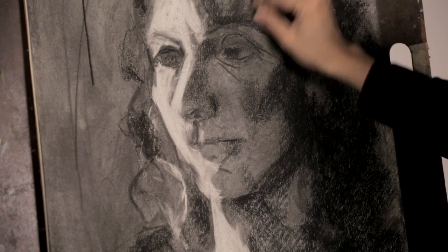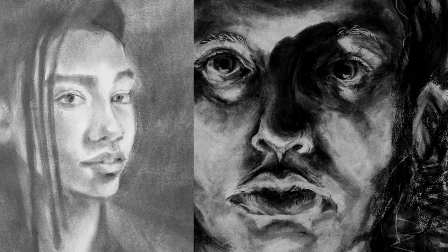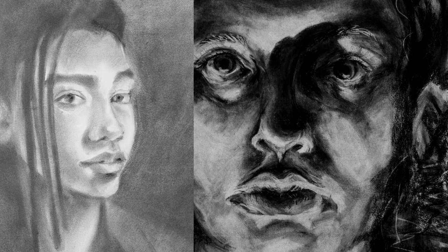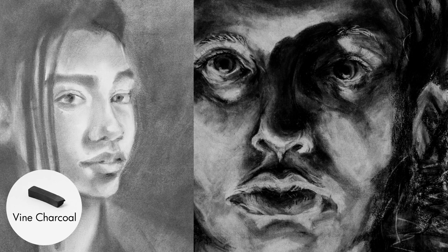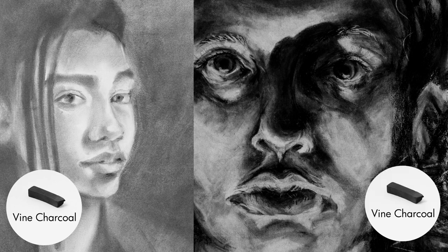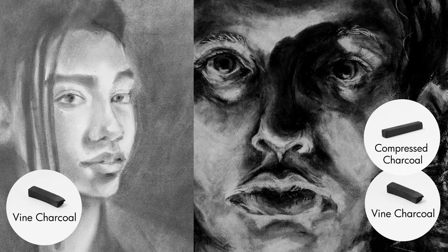Compressed charcoal should be the heart of your drawing. For example, in the drawing on the left, the student only used vine charcoal, so the portrait looks dull and gray. On the right, the student did her initial sketch in vine charcoal and drew many layers of compressed charcoal on top, giving the portrait a dramatic, rich quality.